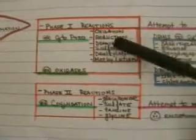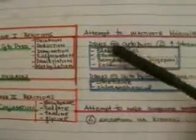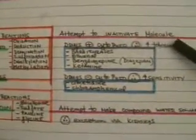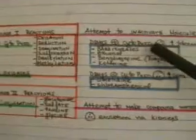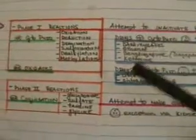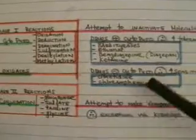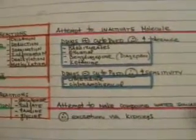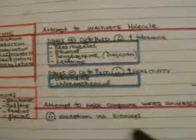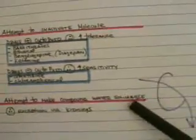We can think of Phase 1 reactions as an attempt to inactivate certain molecules. Once these molecules are inactive, Phase 2 reactions attempt to make these inactive compounds more water-soluble so they can ultimately be excreted via the kidneys through the urine.